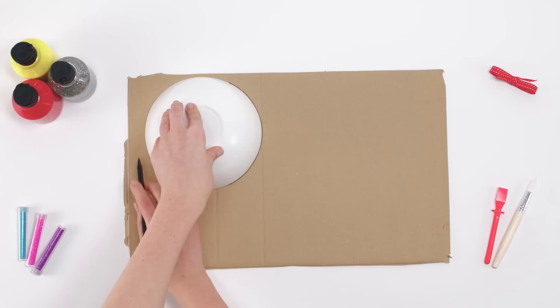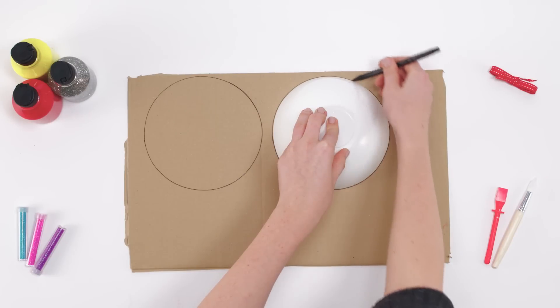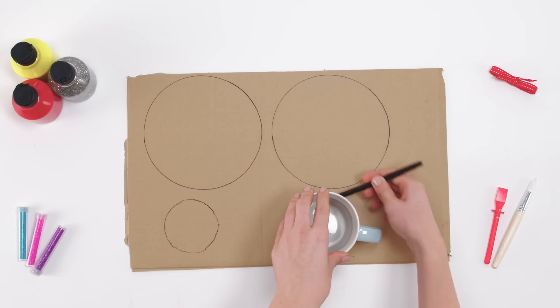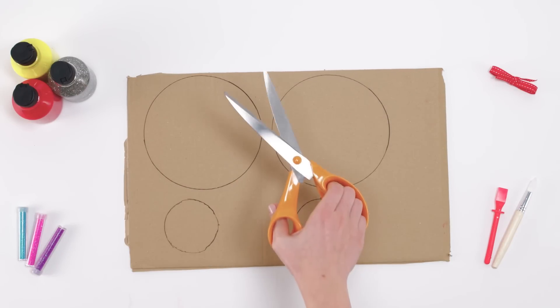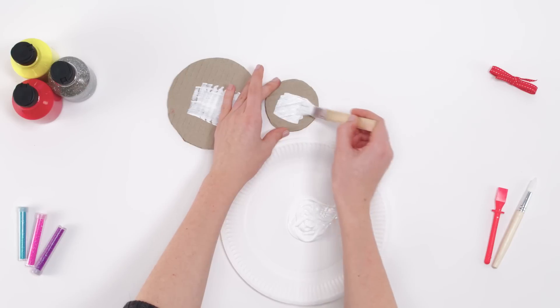Next, on some cardboard, use a bowl to draw two circles and a mug to draw two smaller ones. Cut these out, paint them, and let them dry.